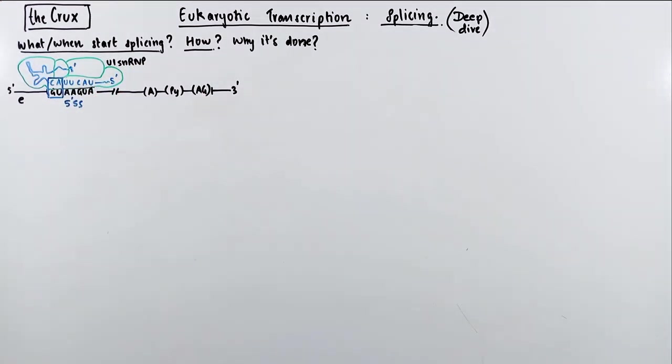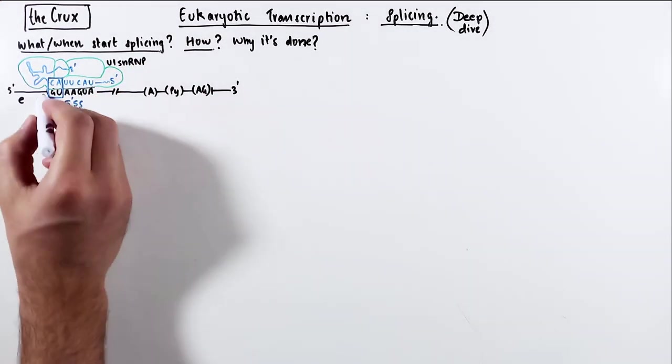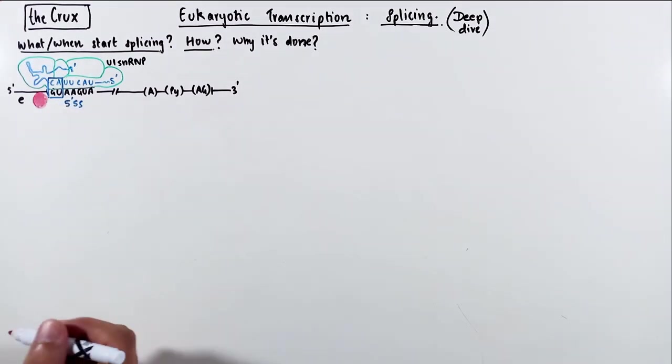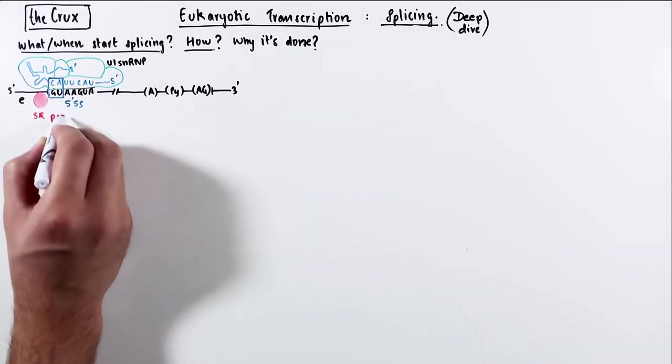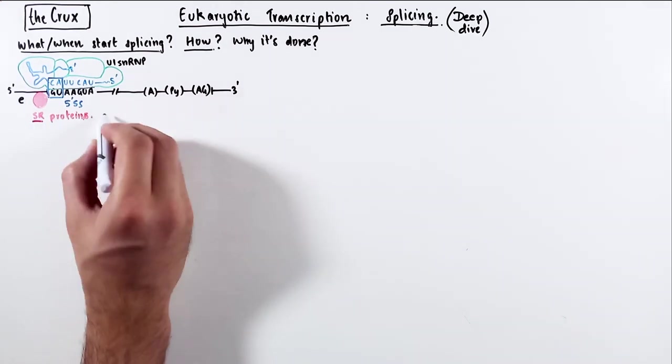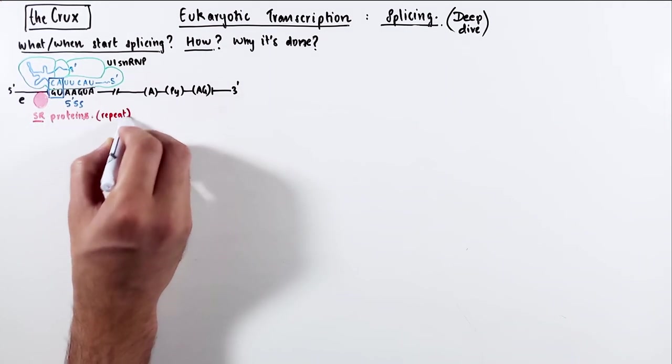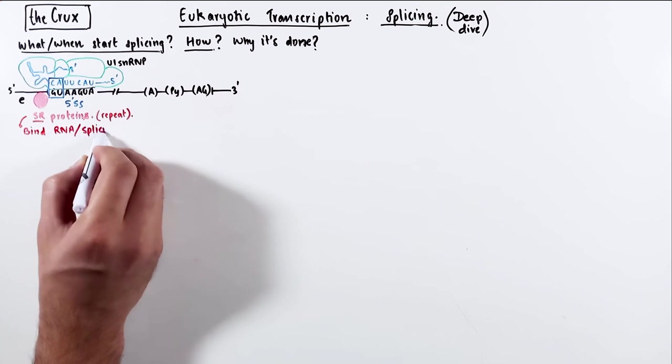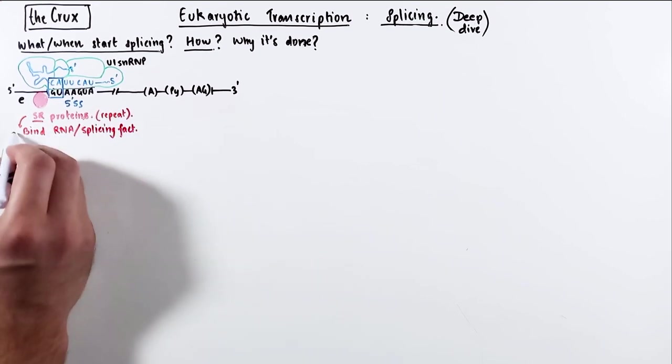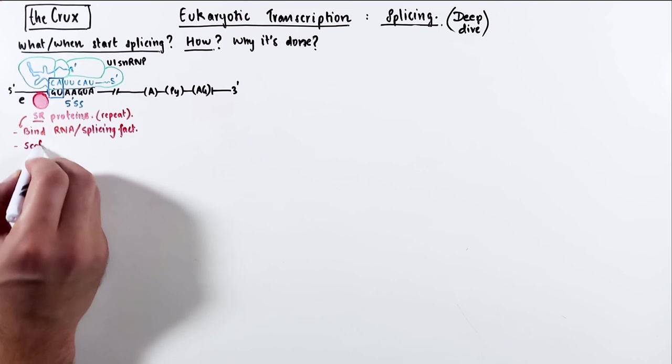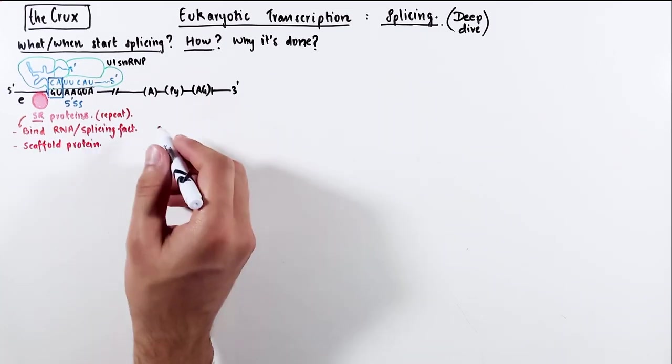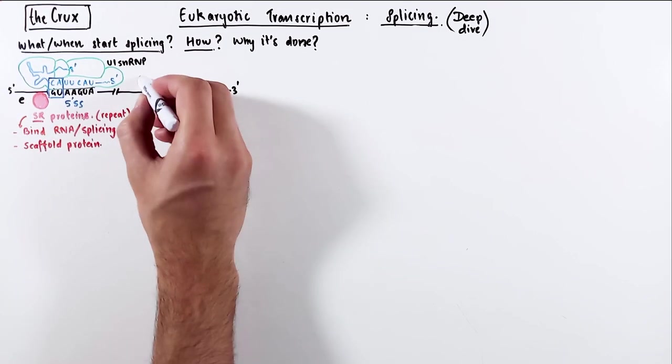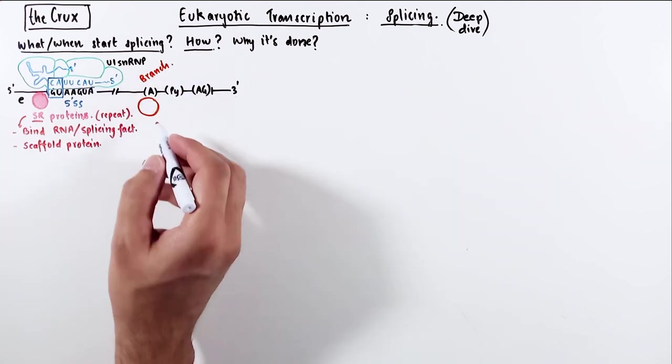Now, this recognition of U1 is further stabilized by SR proteins that bind at the end of the exon, and they're called SR because they have serine and arginine repeats in them. The SR proteins bind both RNA and the splicing proteins, and by and large, they act like a scaffold protein,